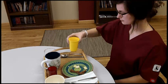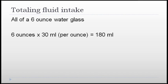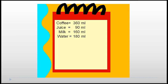The last item on the tray is 6 ounces of water, which Mr. Alan drank all of. To turn 6 ounces into milliliters, multiply 6 ounces times 30 milliliters per ounce. Since Mr. Alan drank the entire glass of water, write 180 milliliters on your tablet, because 6 times 30 is 180. Now total the four liquid items on your tablet: coffee, 360 milliliters; juice, 90 milliliters; milk, 160 milliliters; water, 180 milliliters. The total is 790 milliliters.